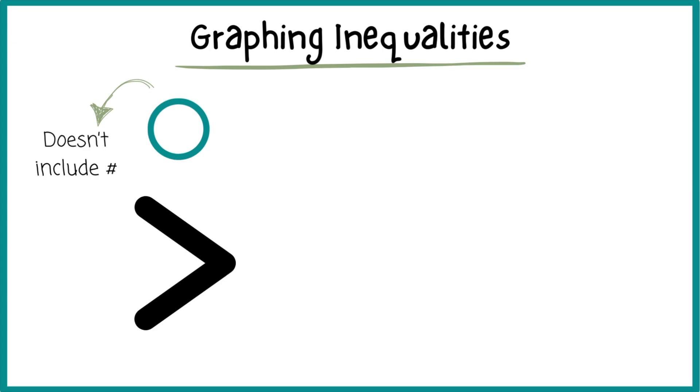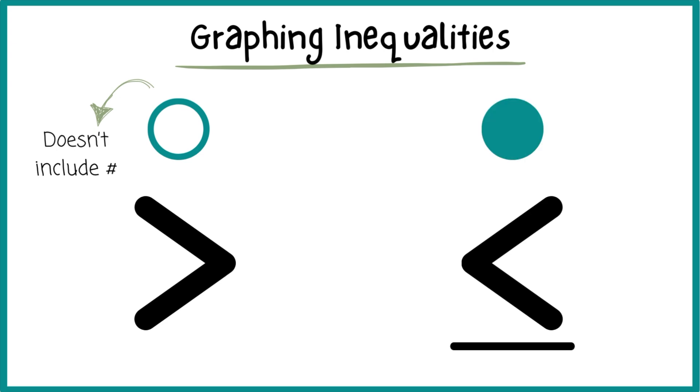However, if I'm looking for a number that is greater than or equal to 5, the dot on top of the 5 will be closed. That means that this number is included in the inequality.